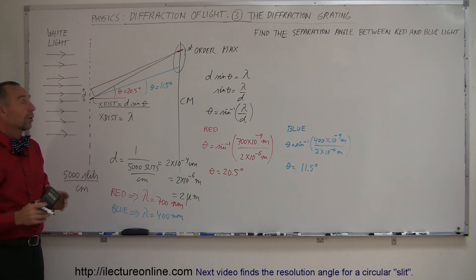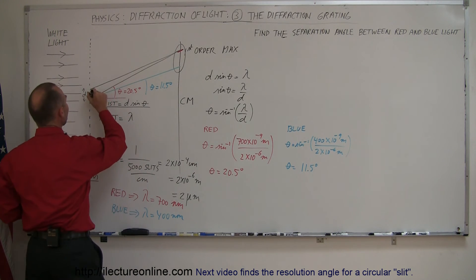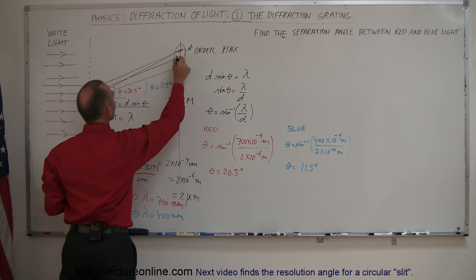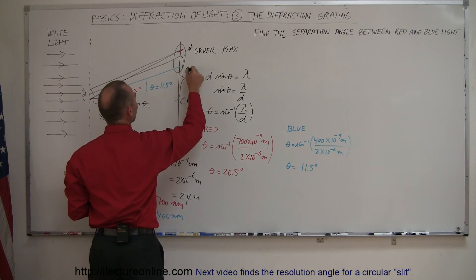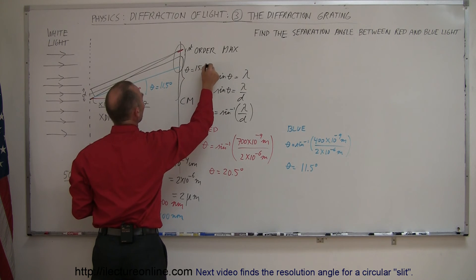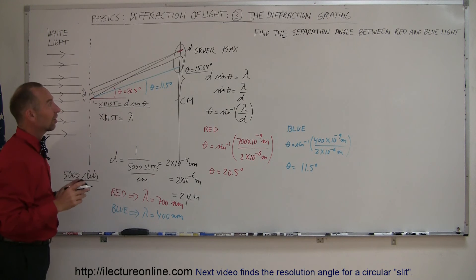Now, you can turn that around. For example, as an example, let's say that you find a particular color right here, and you measure the angle very carefully, you say that the angle theta is equal to 15.64 degrees. What wavelength does that associate itself with?